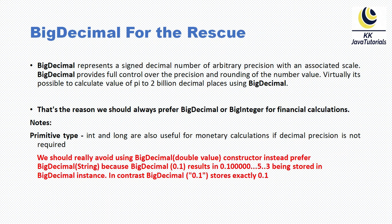Here are the key points: BigDecimal comes to the rescue in this kind of situation. BigDecimal represents a signed decimal number of arbitrary precision with an associated scale. BigDecimal provides full control over the precision and rounding of the number value. Virtually, it is possible to calculate the value of pi to 2 billion decimal places using BigDecimal. That is the reason we should always prefer BigDecimal or BigInteger for financial calculations. Note also that primitive types like int and long are useful for monetary calculation if decimal precision is not required.